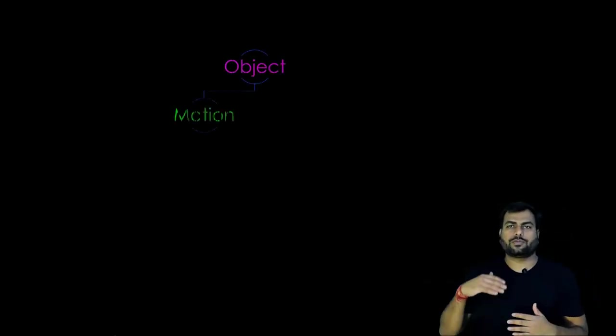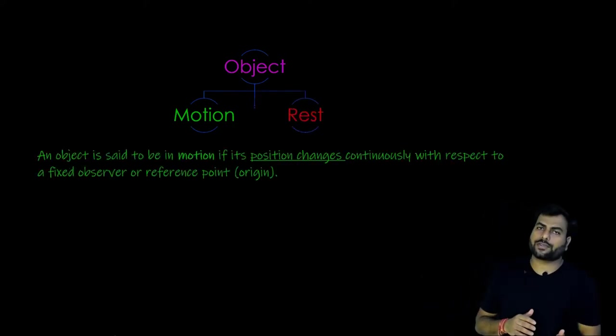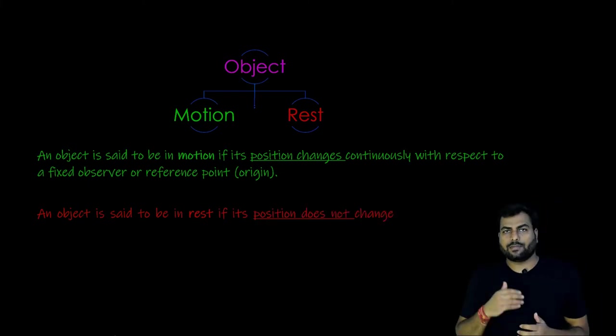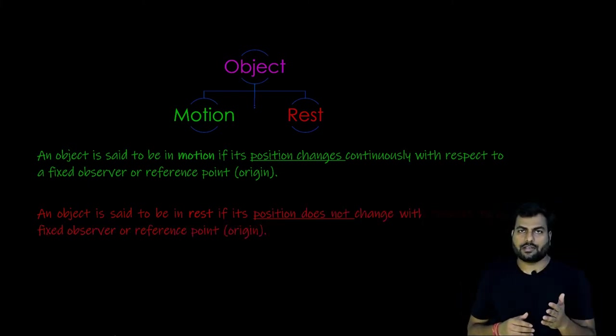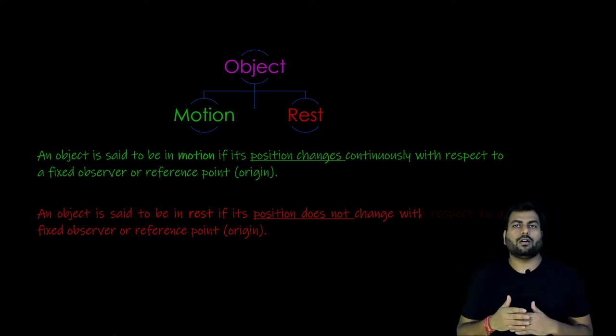So with this understanding, we can define an object is said to be in motion if its position changes continuously with respect to a fixed observer or reference point. Similarly, an object can be said at rest if its position does not change with respect to a fixed observer or reference point.